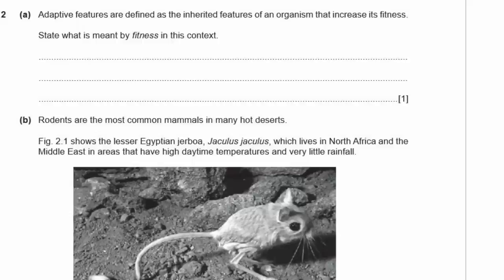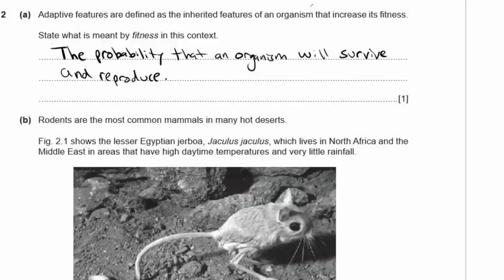Question 2a. Adaptive features are defined as inherited features that increase an organism's fitness. In this context, fitness does not mean being healthy or exercising — it means the probability that an organism will survive and reproduce. A key point many students miss is 'and reproduce,' because the organism must reproduce for the species to continue.